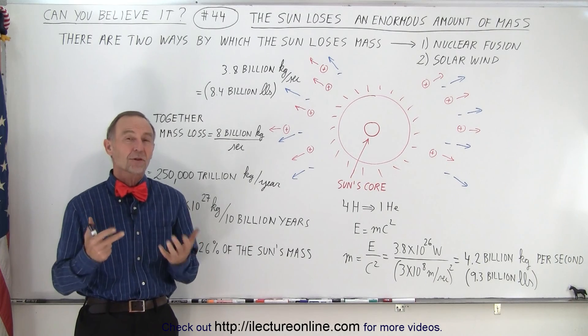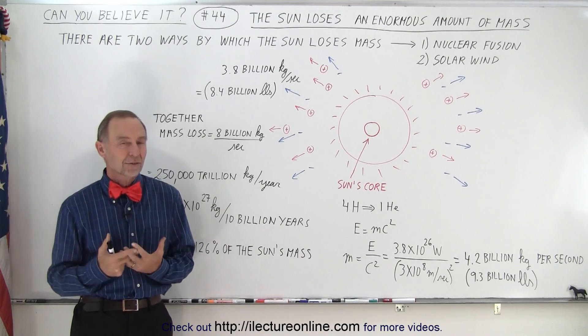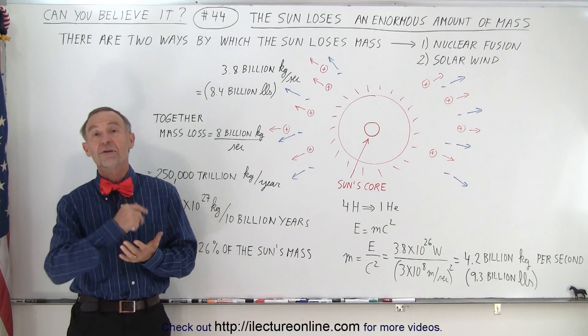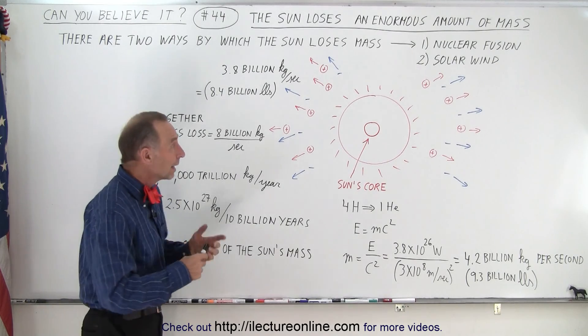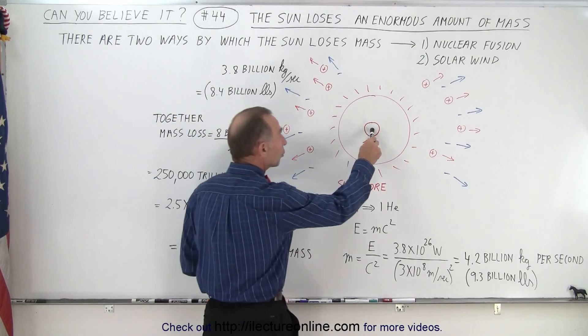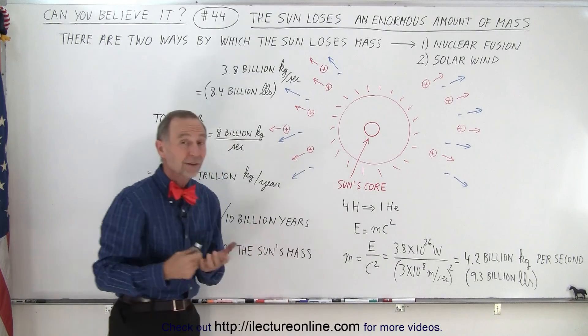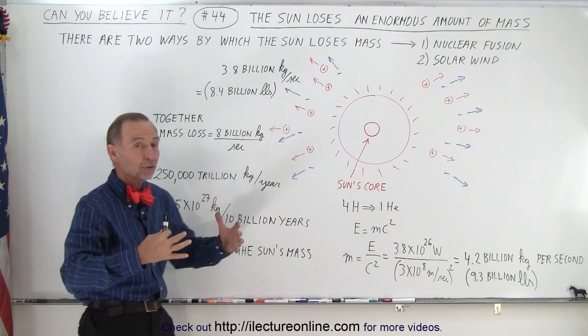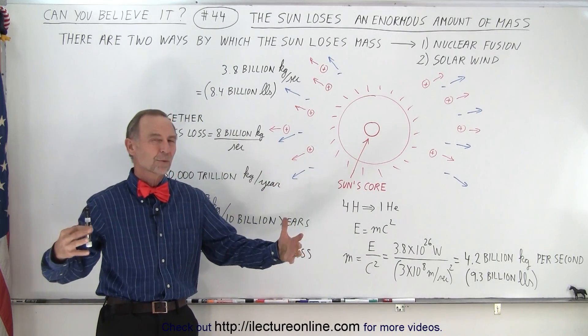But during all these years the sun is actually losing mass, and the sun loses mass in two different ways. The first way it loses mass in its core due to nuclear fusion. The second way it loses mass due to the solar wind.